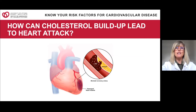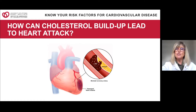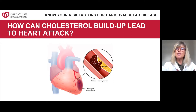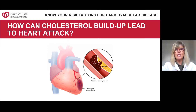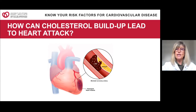How can cholesterol buildup lead to a heart attack? You see the coronary arteries on top of the heart and a cross section of one branch. Plaque develops in the blood vessel making the lumen smaller, then platelets bunch up and block blood flow completely — that is a heart attack. The location of the blockage matters: higher on the arterial tree is more significant because a larger area of heart muscle is damaged.